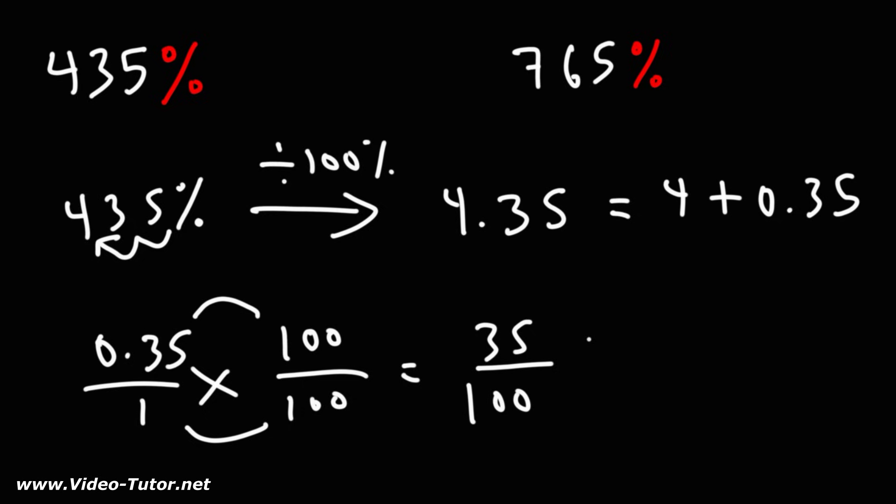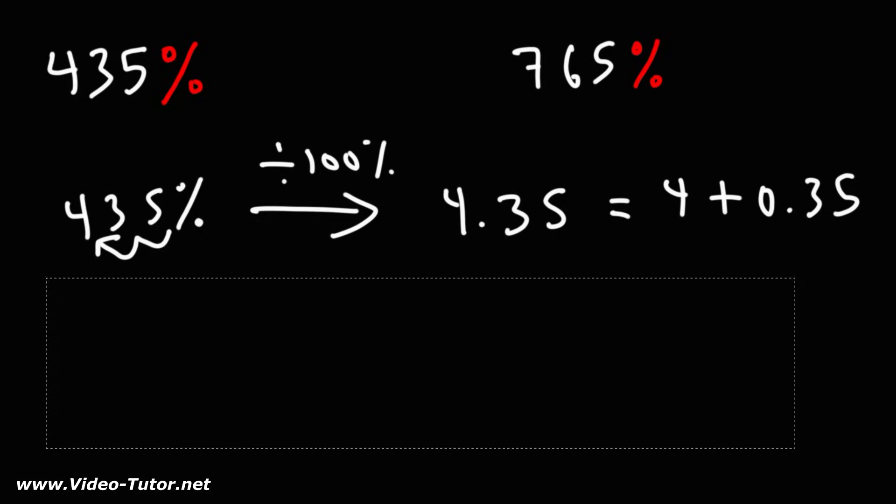Now, we need to simplify the fraction. 35 and 100, they're both divisible by 5. They're multiples of 5. 35 divided by 5 is 7. 100 divided by 5 is 20. So 0.35 is 7 over 20 as a fraction.